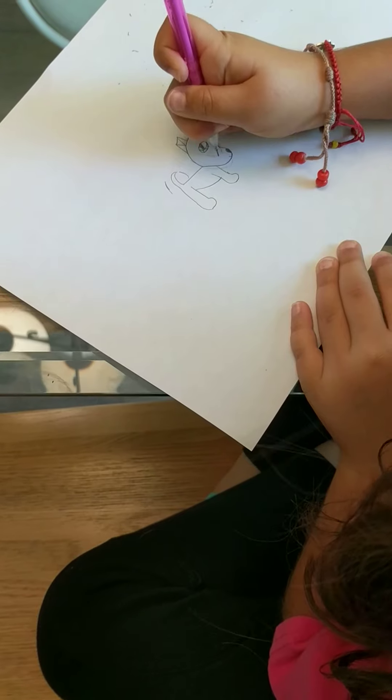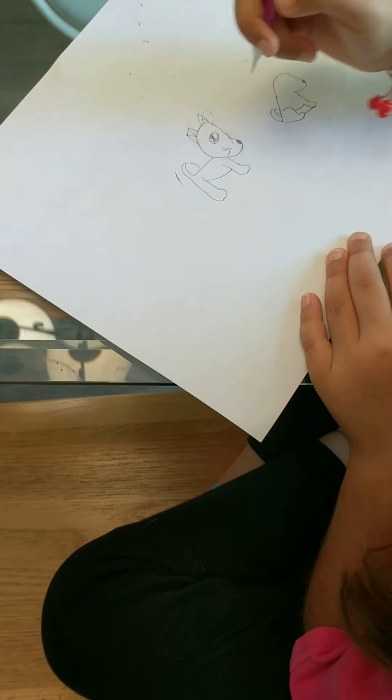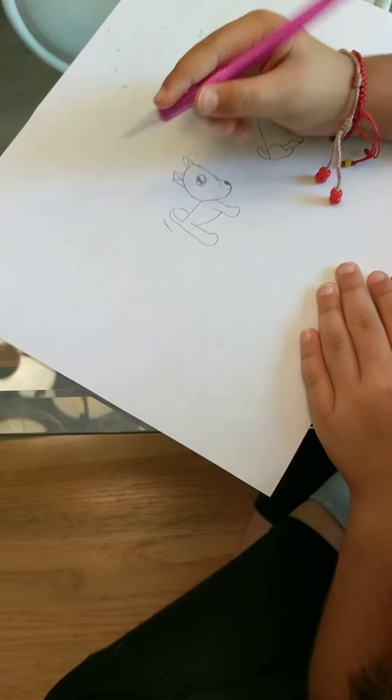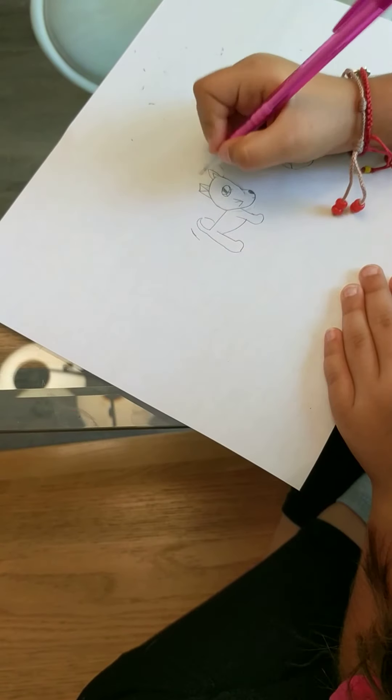Oh yeah. We have to do two, three freckles. And do the whiskers. Okay. Dogs have whiskers. Do you know that? And the little eyebrow.